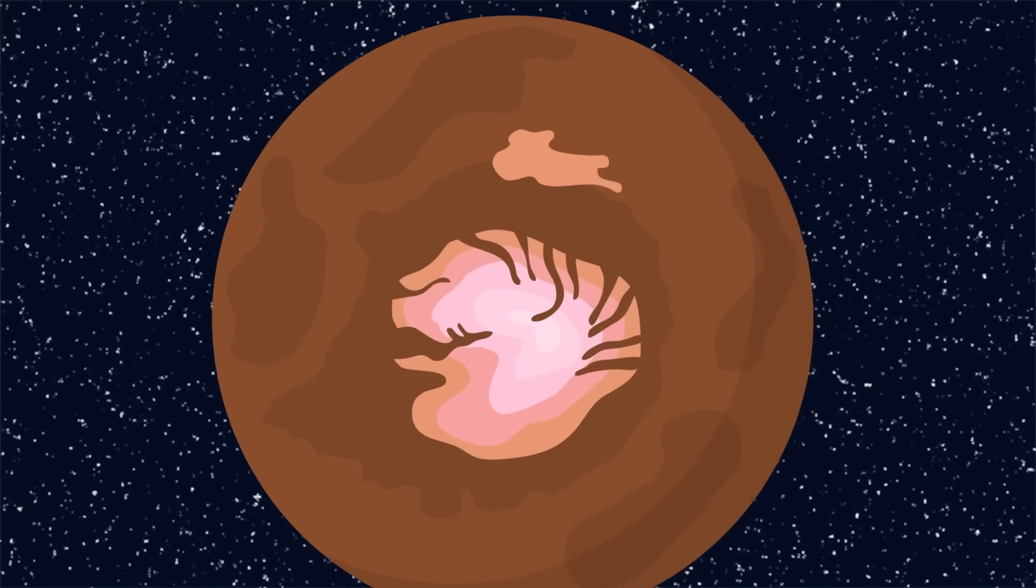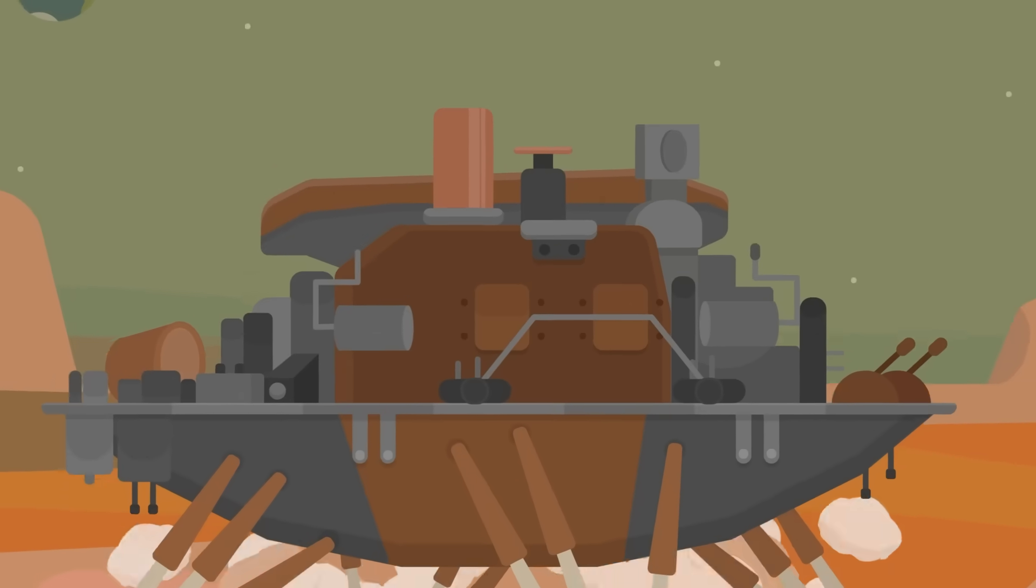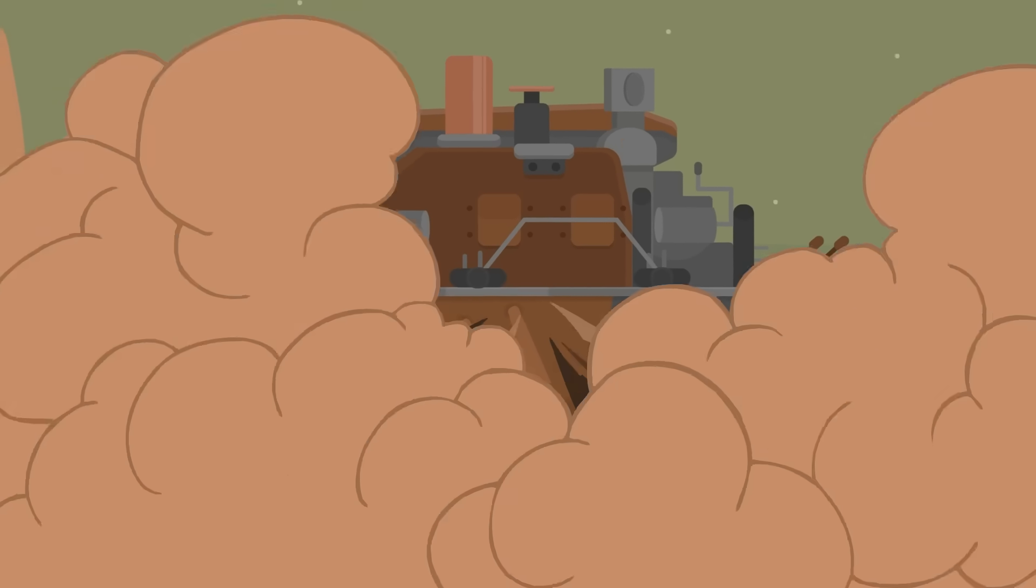Mars has had more unmanned missions on it than any other planet for a number of reasons. For one, it's a lot easier to explore than Venus or Mercury.